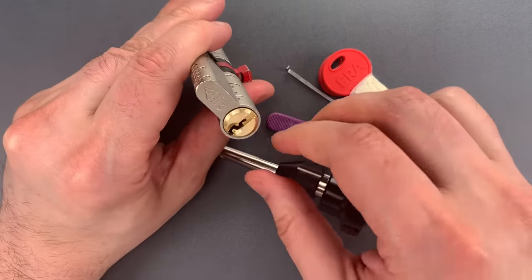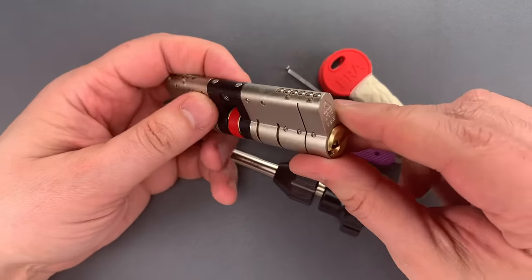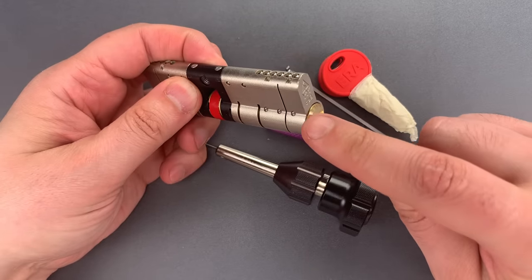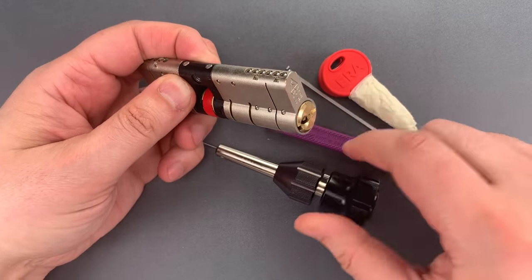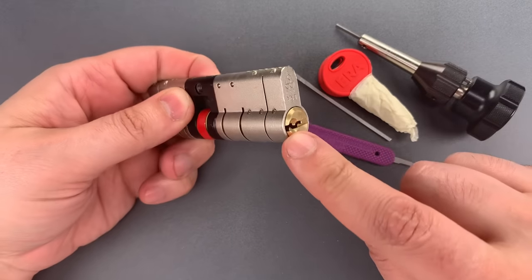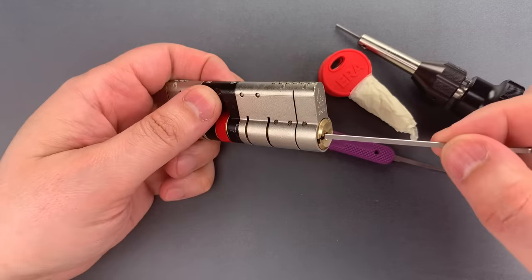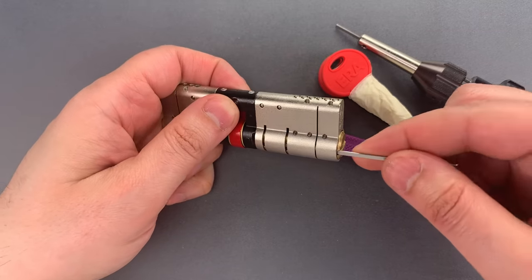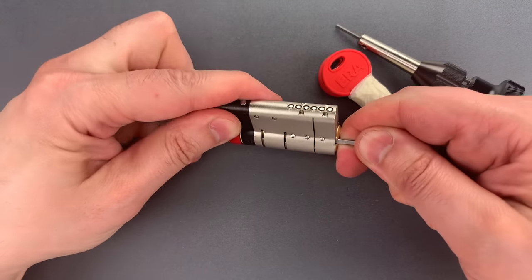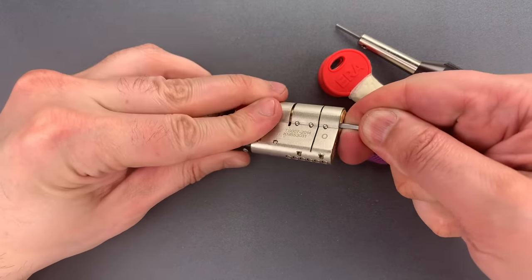And that seems to have worked out nicely. Our next obstacle is the combination of trap pin, driver pin, trap pin, and I'm concerned they'll fall into the bottom of the keyway. So to keep that from happening, I'm going to insert the handle of the turning tool in the bottom of the keyway and usher the core past those three obstacles.